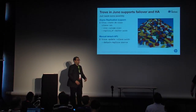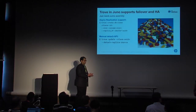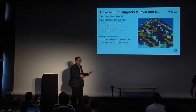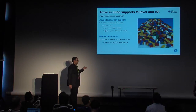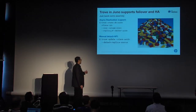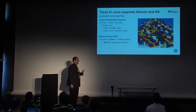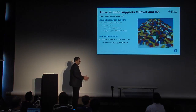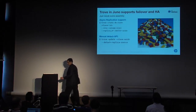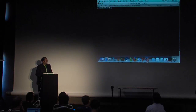When something bad happens to the master, a manual detach of the slave needs to happen so you can promote it to master. To do that, we have the Trove update API where you can call the slave and say: update yourself and detach yourself from the replica source because I want you to not be read-only — be a new master. I'm going to quickly walk through the demo.